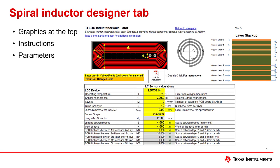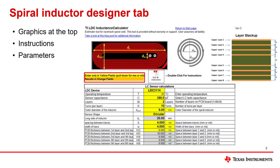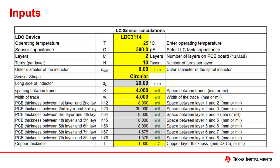As we talk about what the spiral inductor designer tab includes, I will also be going through a design for a coil. At the top of the tab there are a few graphics to help demonstrate some of the design parameters. Below that is an embedded PDF with additional instructions. The inputs are shown in yellow fields while the outputs are shown in orange. Some fields are grayed out because they are not active for the current settings.